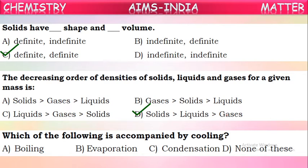Question 7: Which of the following is accompanied by cooling? Boiling is caused by heating — it takes energy. Condensation involves release of energy. Only evaporation occurs with cooling. If you take any volatile liquid in your hand, when it evaporates, it makes the surroundings cool. So evaporation is accompanied by cooling.